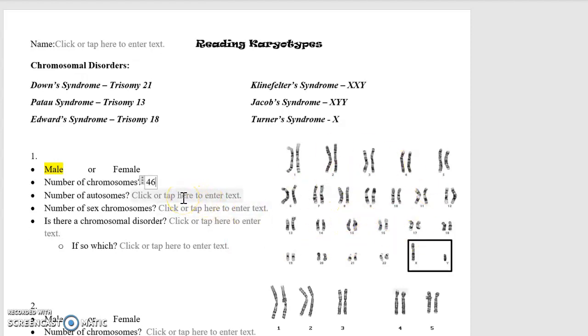Then it asks the number of autosomes, but I actually prefer to do the sex chromosomes first. So I'm going to skip down to there. Sex chromosomes is easy because there's only two in the box. There's only two chromosomes in this individual that determines their sex.